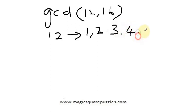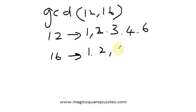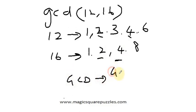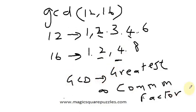And what are the divisors of 16? One, two — three doesn't divide 16 — so four divides 16, then eight. The common factors are two and four. We are concerned only with the GCD, that is the greatest common factor. Four is the greatest common factor of 12 and 16.